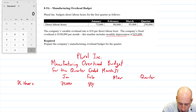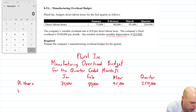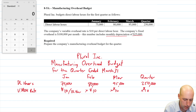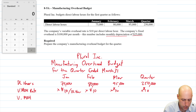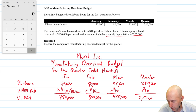The direct labor hours are 75,000 for January, 80,000 for February, 95,000 for March, totaling 250,000 for the quarter. We multiply that by our variable overhead rate of $10 per direct labor hour to figure out our applied variable overhead: 75,000 × $10 = $750,000; 80,000 × $10 = $800,000; 95,000 × $10 = $950,000; and 250,000 × $10 = $2,500,000.